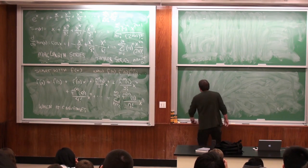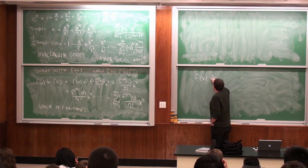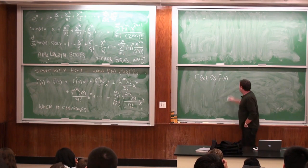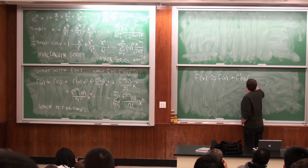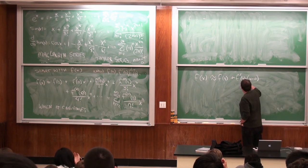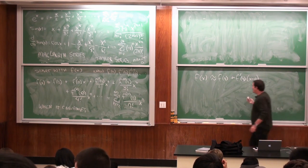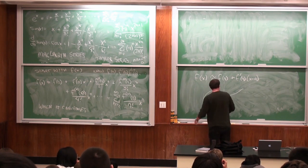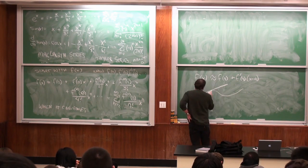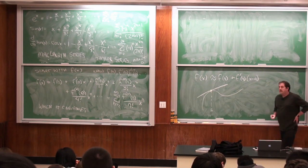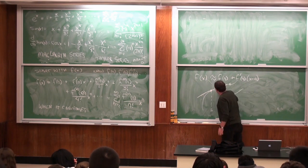You actually did see this in first semester calculus. One thing you did a lot was: I have some function, and I said this function is just about its value at some point plus the derivative times (x minus a). You've seen this before — this is a tangent approximation. If I know the value at a and I know the derivative at a, I know a line that approximates the function. This is the equation of that tangent line.